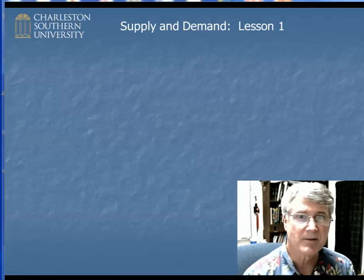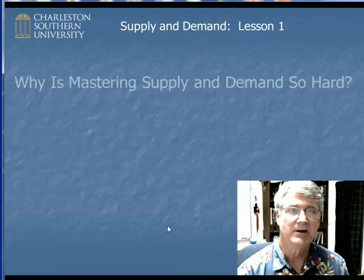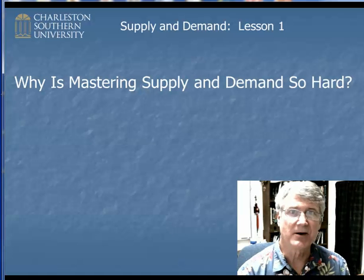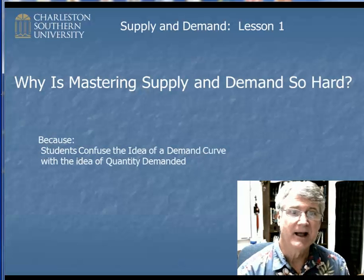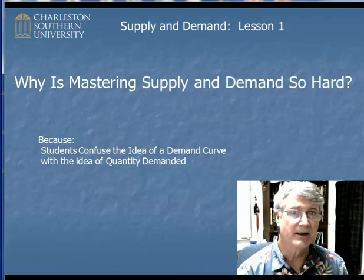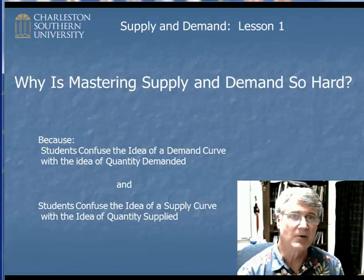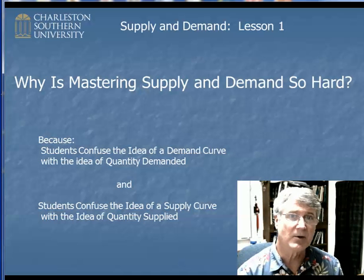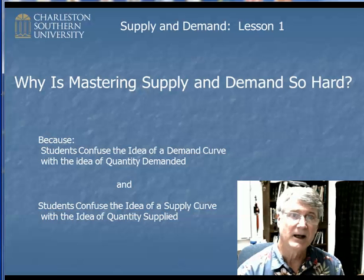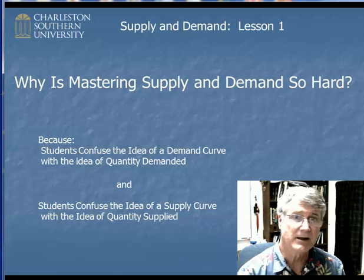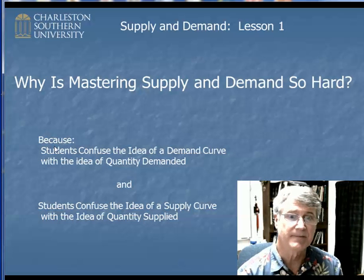So the first lesson is about why mastering supply and demand is so hard. In my opinion, it has to do with a kind of sloppy use of the word demand and the word supply. Students confuse the idea of a demand curve with a very different idea of quantity demanded, and the idea of a supply curve with a very different idea of quantity supplied. It's really not your fault — the media does it too. Even sometimes in the Wall Street Journal, I can see misuse of these words. They're very different concepts and they generate quite a lot of confusion, especially in the early chapters on supply and demand in any textbook.